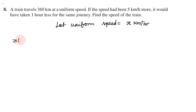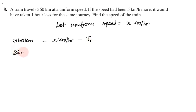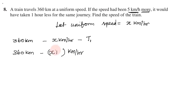The first journey is 360 km at x km per hour. If the speed is increased by 5 km per hour, the new speed is x plus 5 km per hour. The time T2 is 1 hour less than T1.